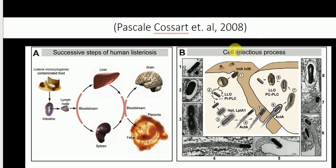Now, talking about how the bacteria Listeria monocytogenes infects the cell — the bacteria has two really important proteins named internalin A and internalin B. These two proteins are involved in interactions with host factors. Internalin A specifically interacts with human epithelial E-cadherin, and internalin B interacts with c-Met in all cell types.